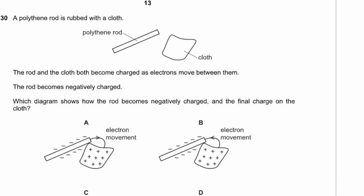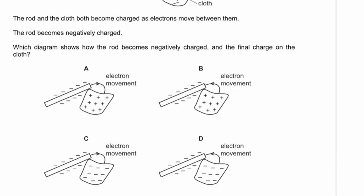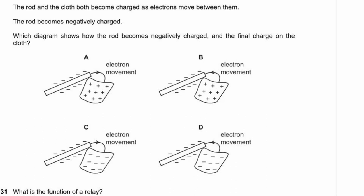Question 30. A polythene rod is rubbed with a cloth and becomes negatively charged. This means electrons have moved from the cloth to the rod — the rod gains electrons. The remaining cloth becomes positively charged. The answer is B.